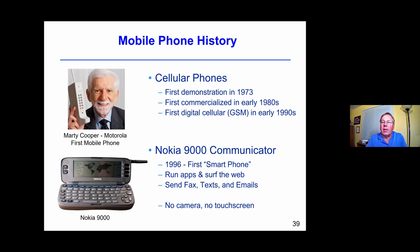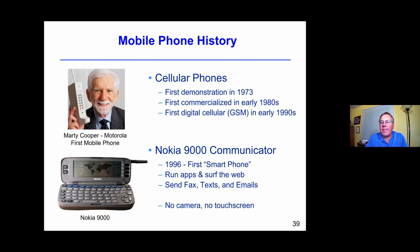Cellular phones were first demonstrated in the 1970s and commercialized in the early 1980s. The first digital systems came out in the 1990s. On the left is Marty Cooper from Motorola with the first mobile phone. I actually have his autograph because I was a co-op at Motorola working in his division, and he signed my thesis on the front page on behalf of Motorola. The Nokia 9000 on the right is really the world's first smartphone, coming out in 1996. It let you run apps, surf the web, and send texts and emails, but there's no camera, no touch screen, and clearly this is not the dominant design for smartphones today. It took more than ten years to evolve from this to what became the dominant design.